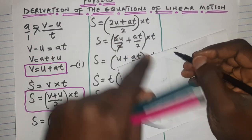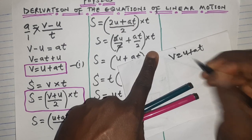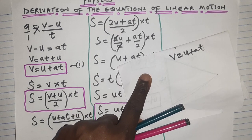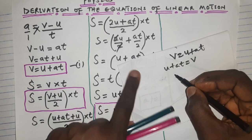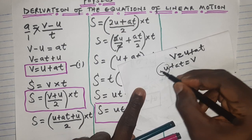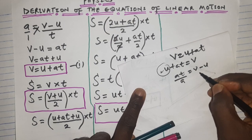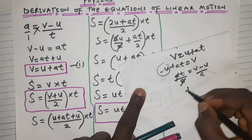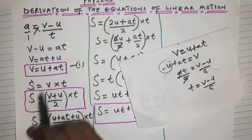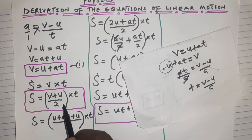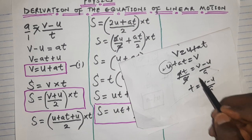From v = u + at, rearranging: at = v − u, so dividing both sides by a gives t = (v − u) / a. Now that we have t, I'll substitute this into the distance equation.